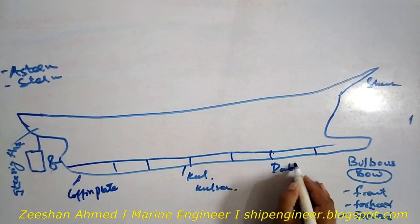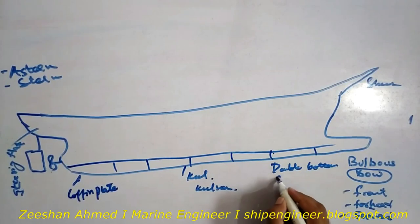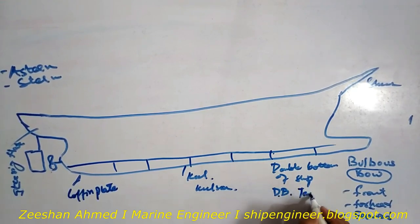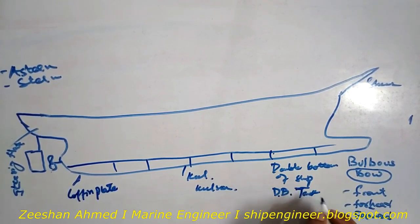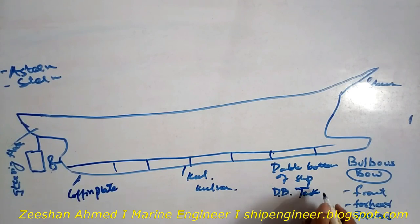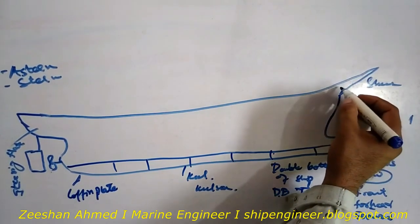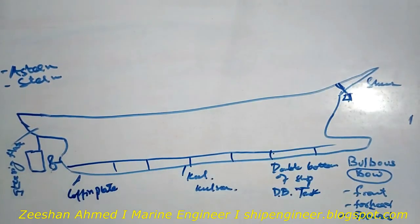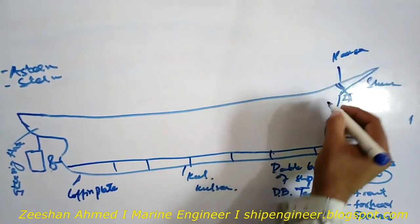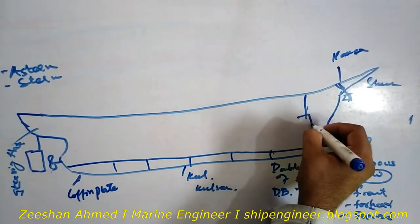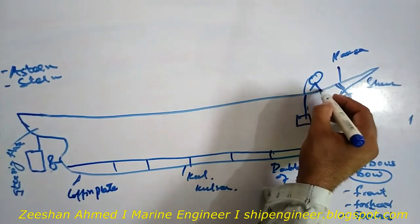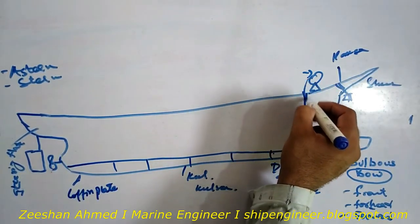This is known as the double bottom of the ship, or simply DB tank — D.B. tank — because this space is used as a tank for ballast to maintain the stability of the ship, or to keep the ship upright for comfortable sailing. Here is the hawse pipe — the hawse pipe for the anchor. The anchor will stay here. From the hawse pipe, the chain runs to the room where it drives the chain onto the windlass. This pipe is known as the spurling pipe.